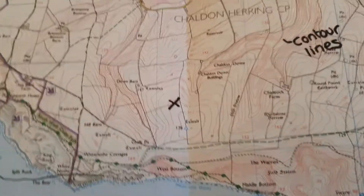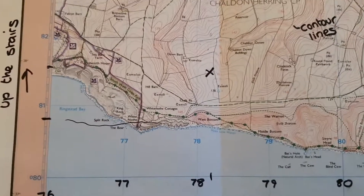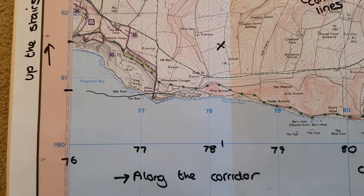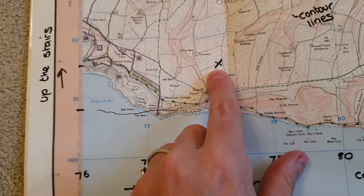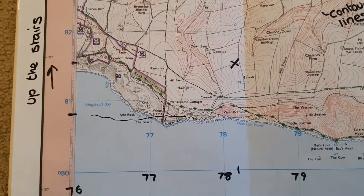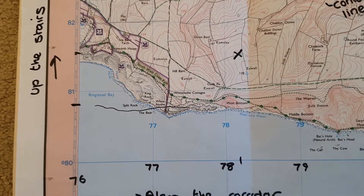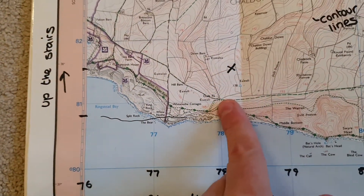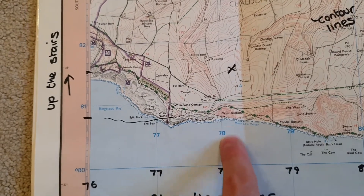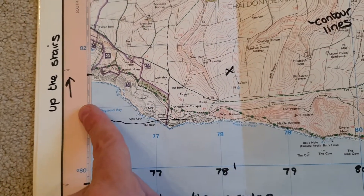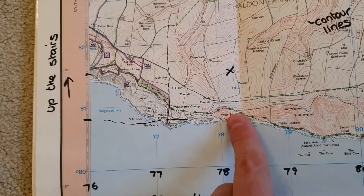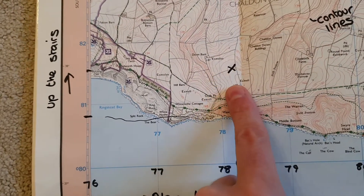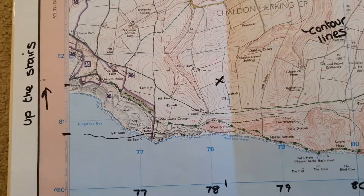Now you try one. I've put a cross on the map here — see if you can find out the four-figure grid reference for this cross. So if we go to the bottom left hand corner, this line is called 78 and this line is called 81. So going along the corridor, up the stairs from there, we'd be in this box. The four-figure grid reference for the cross would be 78, 81.